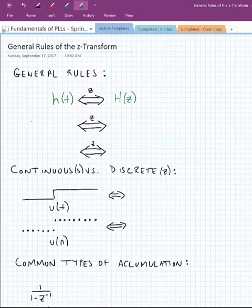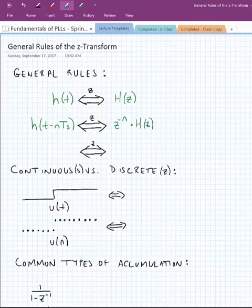We can find a function that has some time delay in it, t minus n times t_sub_s. And if we want to account for that time delay, we simply need to multiply the Laplace transform of the original function by z to the minus n. And what we are really doing here is accounting for a delay of n samples.